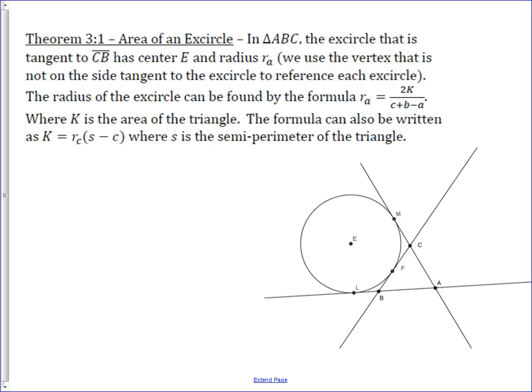So in this theorem, we look at the area of the triangle ABC and compare it to the radius of the x-circle that is tangent to side BC.